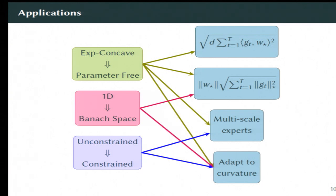I'm going to talk very, very briefly about how to do this problem, which is the second-order regret bound in Banach spaces, and how to adapt to strong convexity.